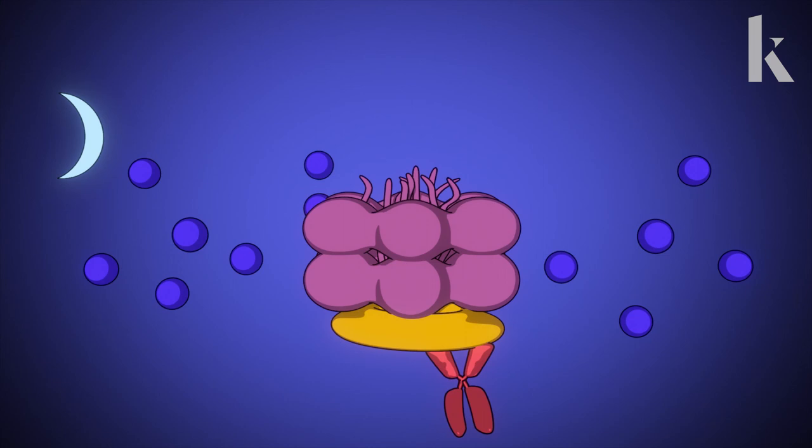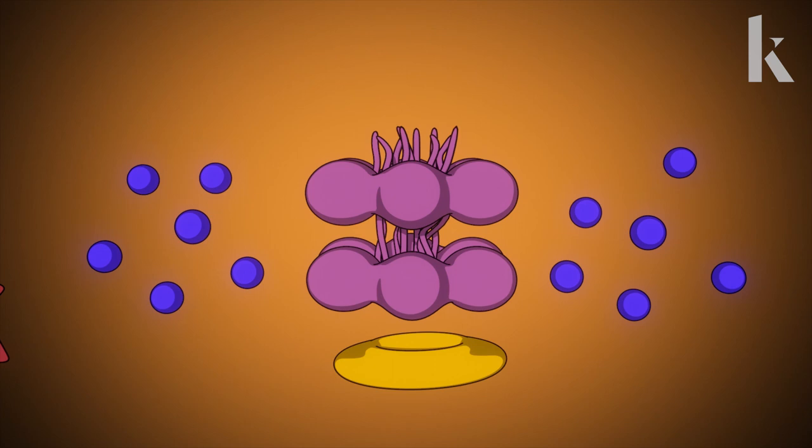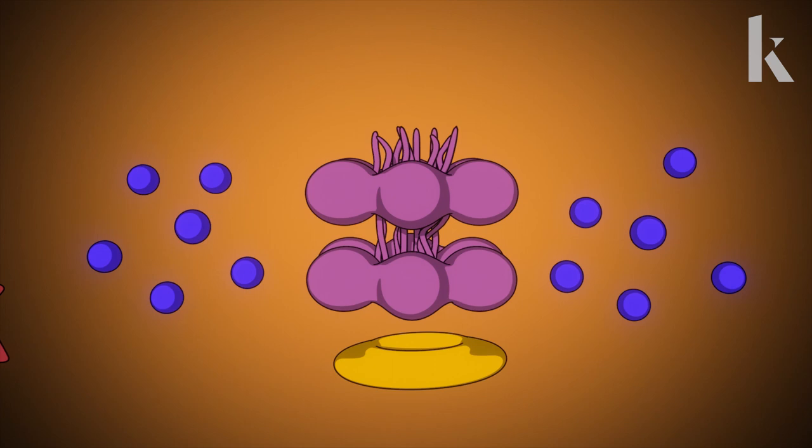Tick-tock, tick-tock. By dawn, Kai-C has shed its phosphates. Kai-C's donuts relax. Its little levers protrude again. The cycle starts over.